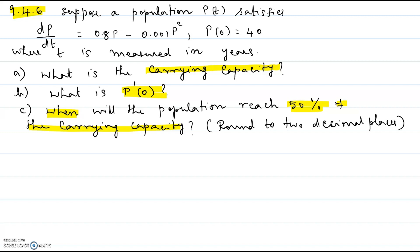In this video I will be showing you problem number 6 of chapter 9 section 4. Suppose a population p of t satisfies dp/dt equal to 0.8p minus 0.001p squared, with the initial condition p(0) equal to 40, where t is measured in years. Part a: what is the carrying capacity? Part b: what is p prime of 0? Part c: when will the population reach 50 percent of the carrying capacity?